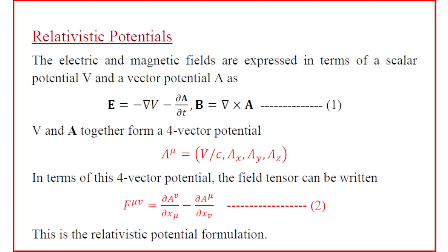A^μ runs from zero to three: A0, A1, A2, A3. In terms of this four-vector potential, the electromagnetic field tensor can be written as F^μν. We have already defined the electromagnetic field tensor, and the differentiation is with respect to the covariant vector.